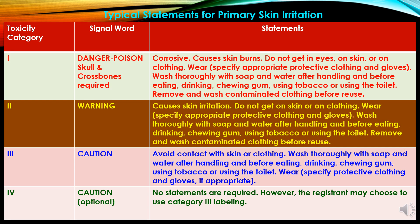Now typical statements for primary skin irritation. In toxicity category 1, the signal word is 'Danger/Poison,' a skull and crossbones is required, and the statement is: corrosive — causes skin burns. In category 2, the signal word is 'Warning,' and the statement is: causes skin irritation. In category 3, the signal word is 'Caution,' and the statement is: avoid contact with skin or clothing. In category 4, the signal word is 'Caution,' and no statements are required.